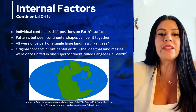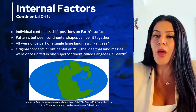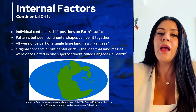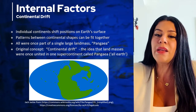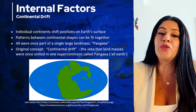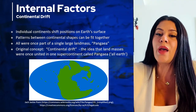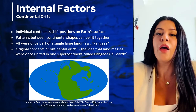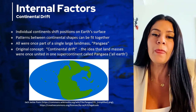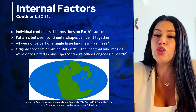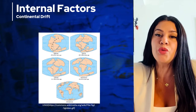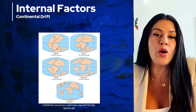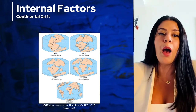He found that Africa and South America both had rock formations that matched up when you move the continents together. Then the discoveries of fossils of the same prehistoric animals and plants were found on several continents even though they were a thousand miles apart, and once again when you move the continents together the fossil evidence came together. This led to his theory that the continents move and at one point they were all a supercontinent known as Pangaea.